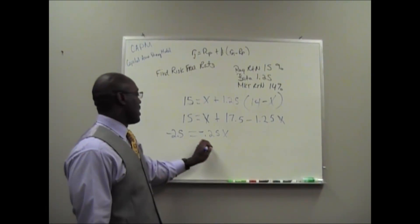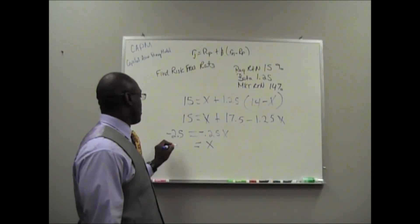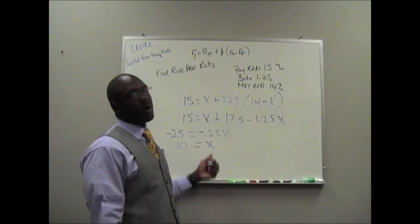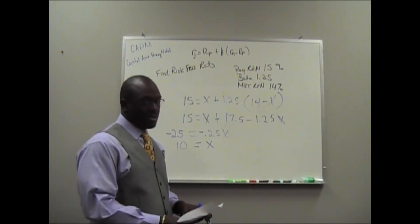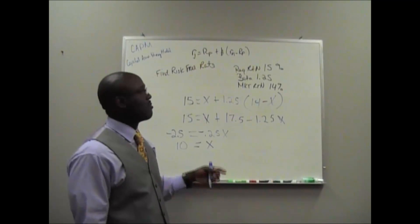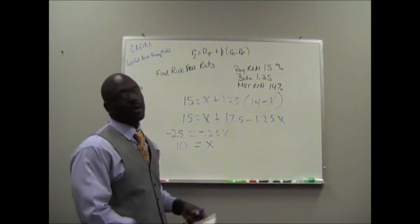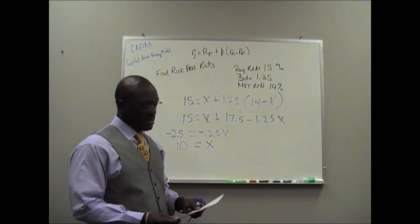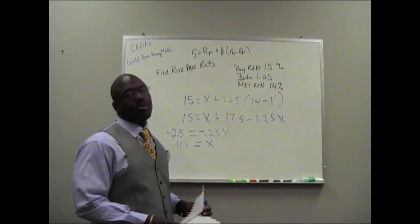When we solve for X, we find out that X equals 10. So in this problem, the risk-free rate is 10. To confirm, we just plug it into the equation and make sure all the numbers add up. We'll do another problem after this.